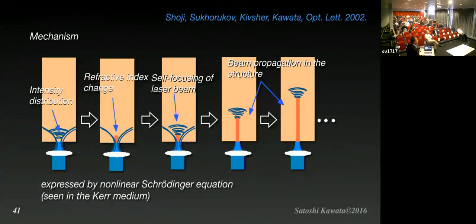We said this is a self-growing optical fiber. This can be explained as follows: if you focus the laser beam, polymerization starts at the highest light intensity position. It changes the refractive index, and this high refractive index part works as a lens to focus the light beam, giving a light spot in front. Then it polymerizes the area in front, the light propagates through this fiber as a waveguide mode emitting focused light at the end, and keeps growing. This can be expressed by nonlinear Schrödinger equations in a Kerr medium — it can be described as a spatial soliton.